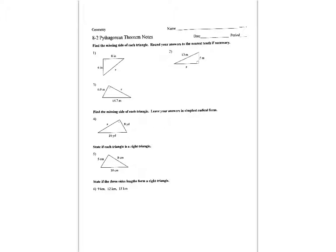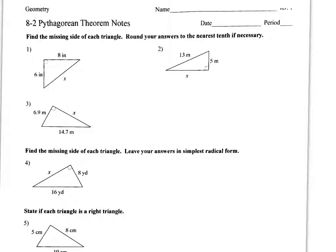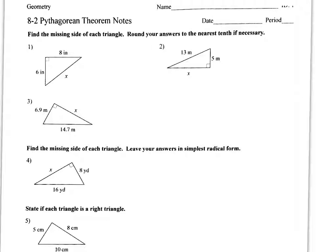All right, this should be a quick lesson because it's review Pythagorean Theorem. So just real quick, let's remember Pythagorean Theorem is A squared plus B squared equals C squared.